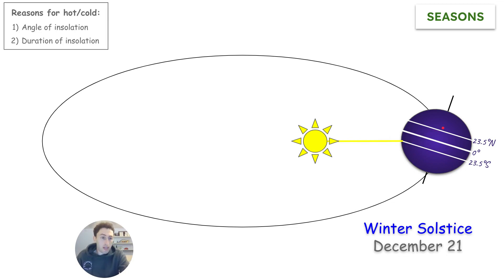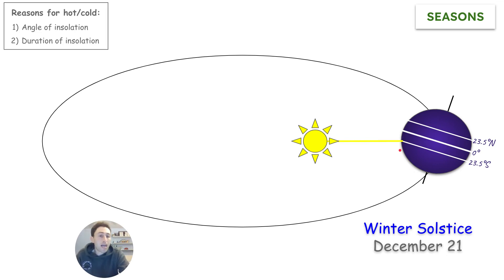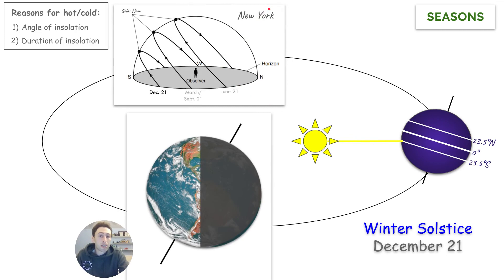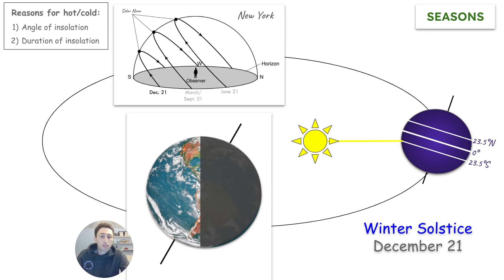The Northern Hemisphere, where New York is located in the U.S., is tilted away from the sun, so it's going to be colder. Since we're tilted away, we get less direct rays from the sun, while the Southern Hemisphere gets more direct rays and is hotter. For someone in New York, on December 21st the sun will appear much lower in the daytime sky because we're tilted away from the sun. Also, we have less duration of insolation — fewer hours of sunlight. The North Pole is completely in darkness. So for those two reasons — less direct rays and less duration of insolation — it's going to be colder in the Northern Hemisphere, which is why it's referred to as the winter solstice.